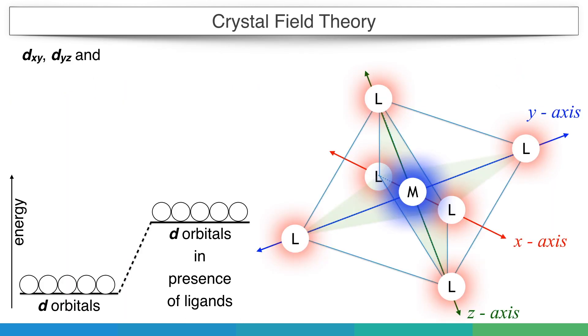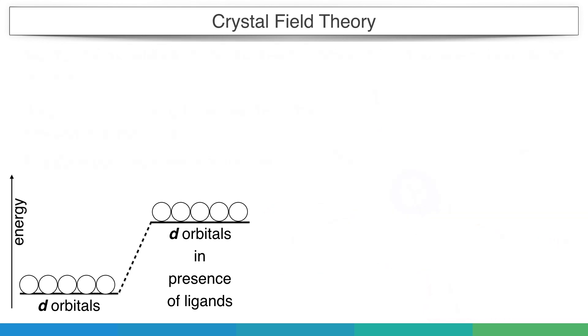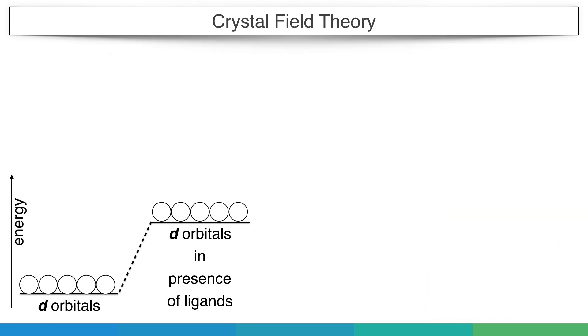When ligands approach in the direction of x, y, and z axes, they will start repelling orbitals which are in x, y, and z directions. And these orbitals are dx²-y² and dz². The remaining three orbitals will be repelled to a lesser extent. As we know that more repulsion means more destabilization, the energy of these two orbitals will be increased.